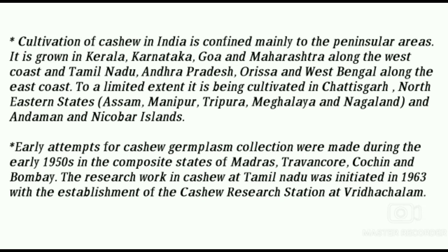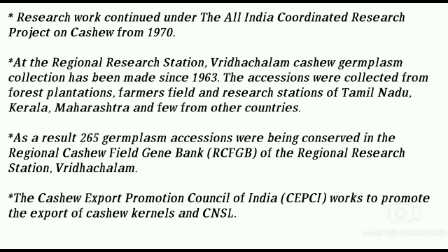Early attempts for cashew germplasm collection were made during the early 1950s in the composite states of Madras, Cochin, and Bombay. Research work in cashew at Tamil Nadu was initiated in 1963 with the establishment of the Cashew Research Station at Vriddhachalam. Research work continued under the All India Coordinated Research Project on Cashew from 1970. At the Regional Research Station, Vriddhachalam, cashew germplasm collection has been made since 1963. Accessions were collected from forest plantations, farmers' fields, and research stations of Tamil Nadu, Kerala, Maharashtra, and a few other countries. As a result, 265 germplasm accessions are being conserved in the Regional Cashew Field Gene Bank (RCFGB) of Regional Research Station, Vriddhachalam.